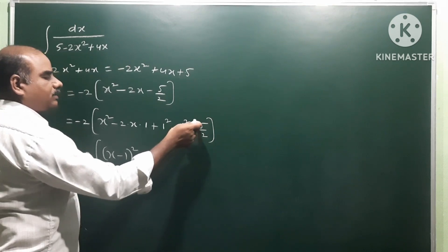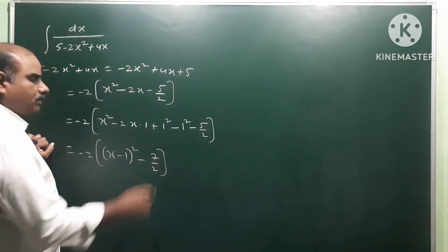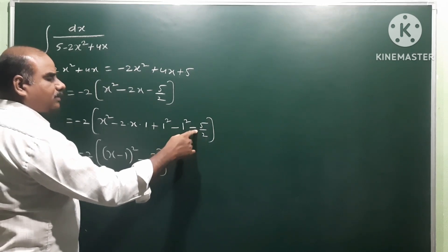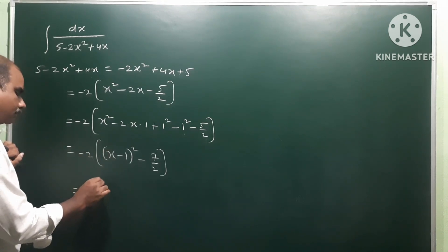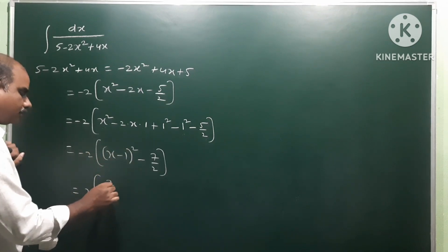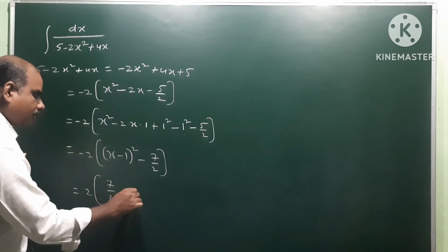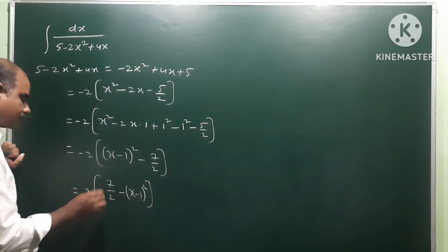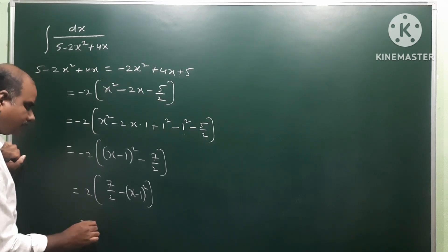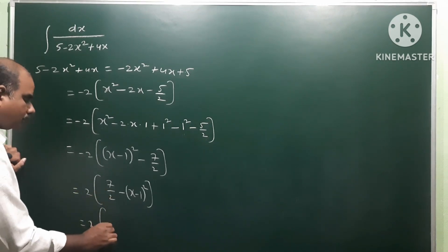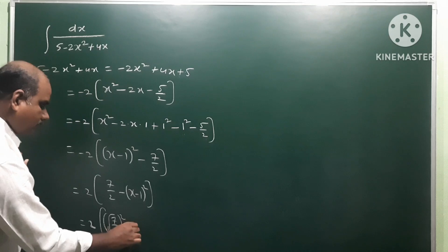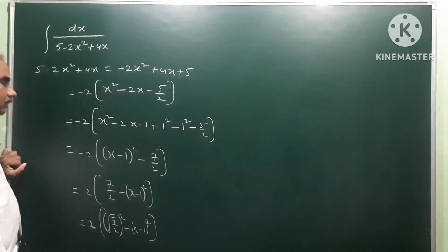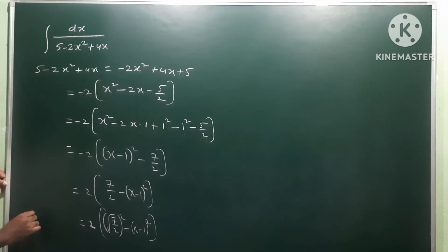So we get: -2[(x - 1)² - 1 - 5/2] = -2[(x - 1)² - 7/2]. The -2 multiplied by -7/2 gives +7/2, and multiplied by (x-1)² gives -(x-1)². Thus 5 - 2x² + 4x = 7/2 - (x-1)², which we represent as (√(7/2))² - (x-1)².